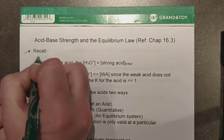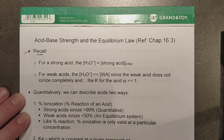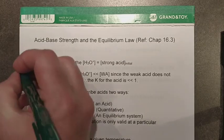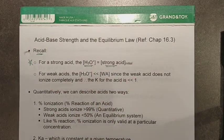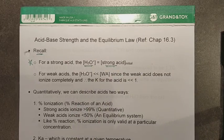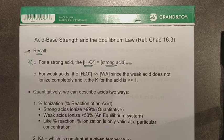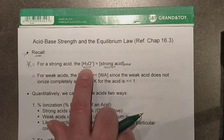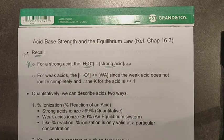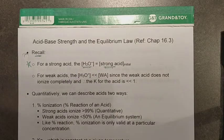A couple of things to remember. For a strong acid, we get to use this equality: if I take any of my six strong acids, whatever concentration I prepare them to — for example, a 1 mole per liter hydrochloric acid solution — I can assume because it reacts quantitatively, my hydronium ion concentration afterwards will be the exact same concentration. This is a nice shortcut we can use for certain calculations.